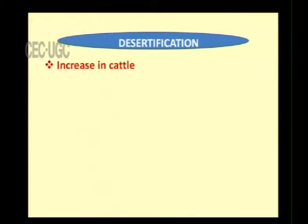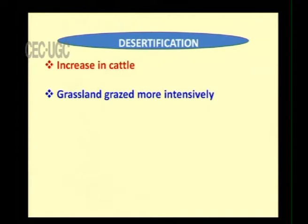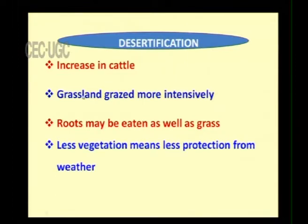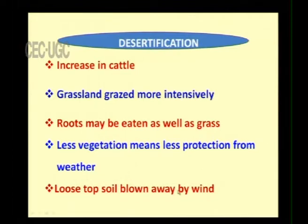The second factor comes from the animal side. When human beings increase in number, cattle numbers also increase, and the grassland is grazed more intensively. Animals eat grass as well as the roots, and less vegetation means less protection from weather. As a result, the loose top soil is blown away by the wind. By these two ways — human and animal activity — the land will become a desert in due course.